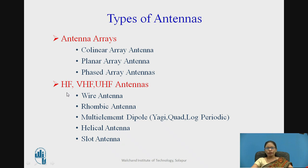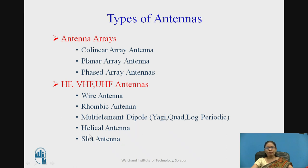Looking at individual antennas categorized by frequency: high frequency, very high frequency, and UHF antennas include wire antenna, rhombic antenna, and multi-element dipole antenna. The multi-element types can be Yagi, log-periodic, or chord antenna. Also included are helical antenna and slot antenna, which can work in HF, VHF, and UHF frequencies based on their design.